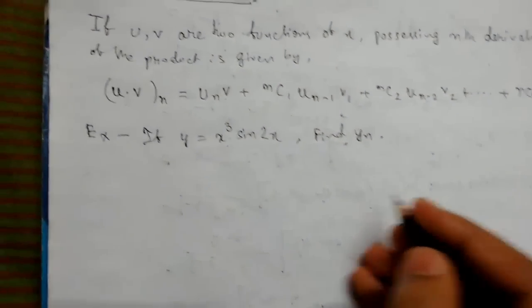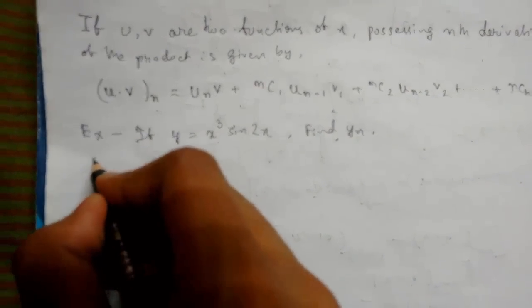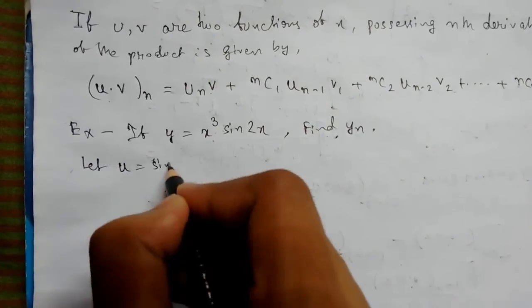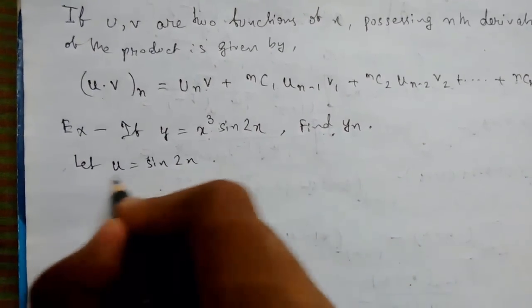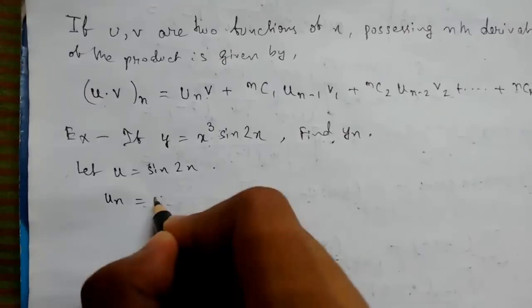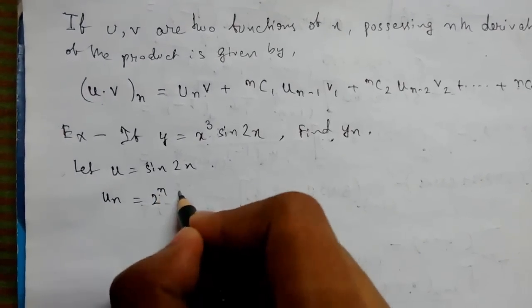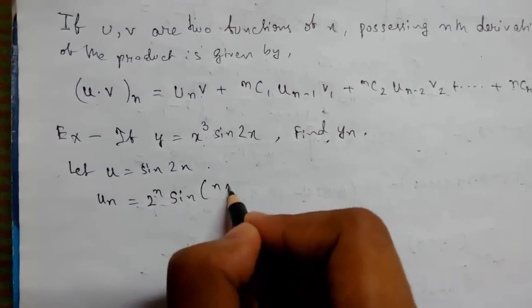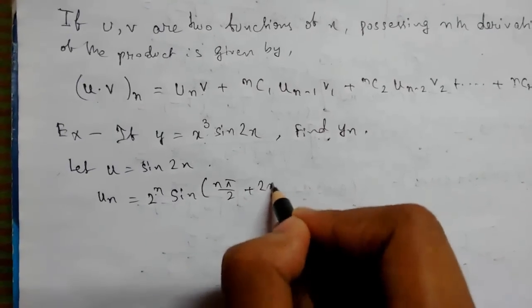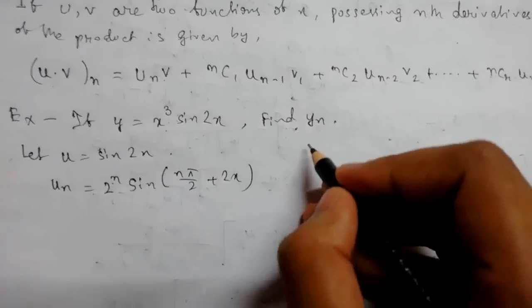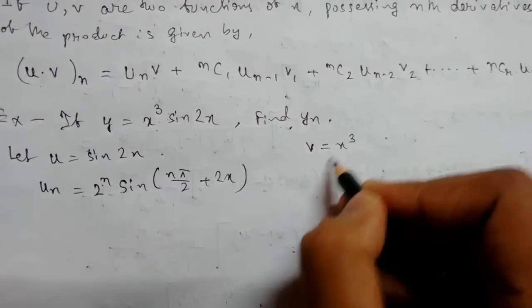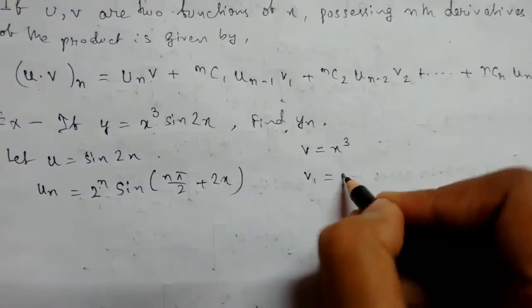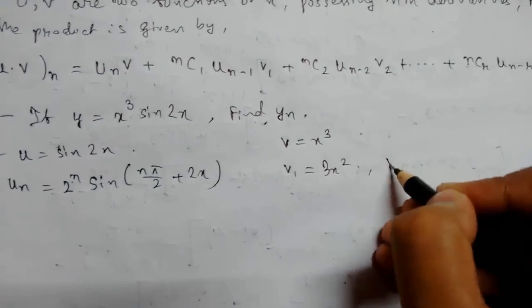Let me show you what I mean. Let u = sin(2x), so u_n is the direct formula 2^n·sin(nπ/2 + 2x) - this formula you need to memorize. v(x) = x³, so v_1 will be 3x², v_2 will be 6x, v_3 will be 6, v_4, v_5 all will be zero.